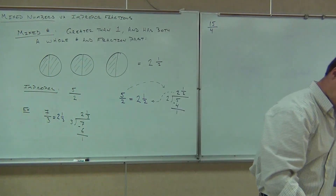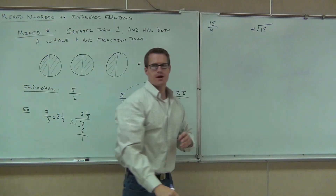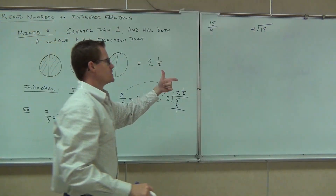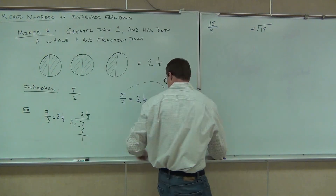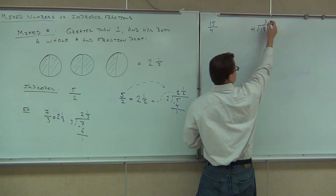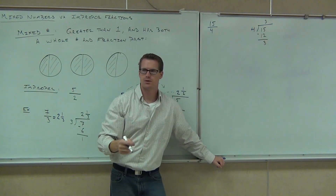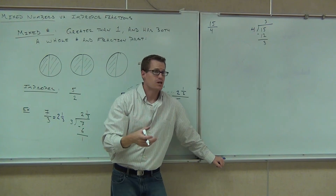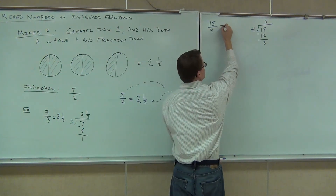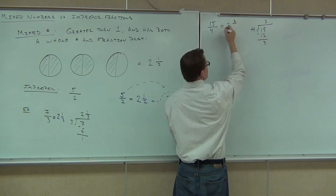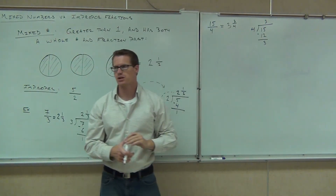Let's try fifteen-fourths. On the inside of our division symbol, we'll put fifteen, and we're dividing by four. Our numerator goes on the inside, our denominator goes on the outside. Four goes into fifteen three times. We multiply to get twelve, subtract to get three. So our answer is three and three-fourths. The denominator does not change — if it's over four here, it will be over four there. So three and three-fourths, that's it.